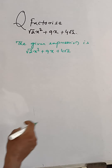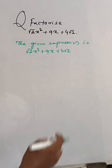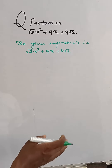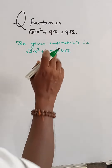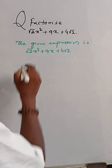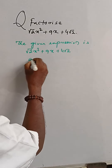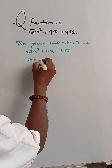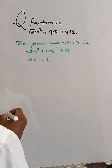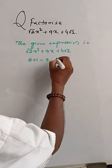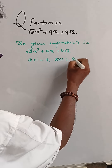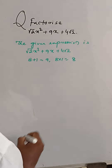Here, we split 9 into two parts whose sum is 9 and product is 8. Clearly, 8 plus 1 is equal to 9, and 8 into 1 is equal to 8.